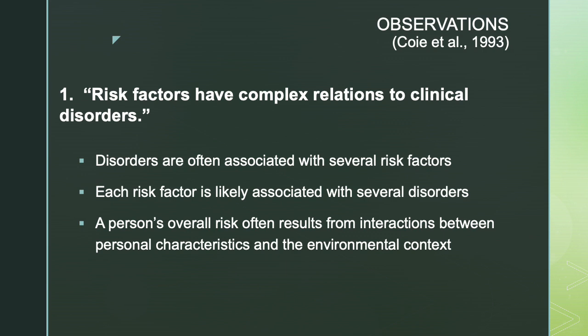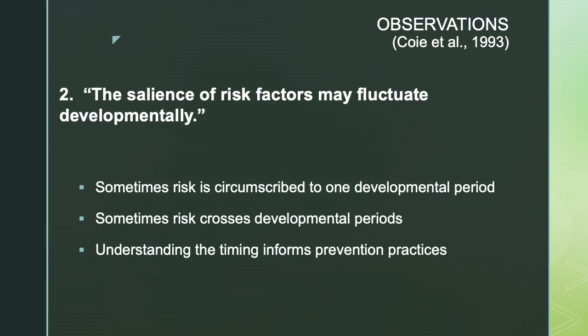Coe et al. emphasize that a person's overall risk often results from the interactions between the person's characteristics and the context within which they reside — it's never thinking about an individual in a vacuum, but always from an ecological framework. The second observation about risk and protective factors is that the salience or the impact of risk factors may fluctuate developmentally. Sometimes a risk is most relevant in a particular developmental period, and understanding the timing of when a disorder has onset and when risk factors emerge will really help inform prevention practices.